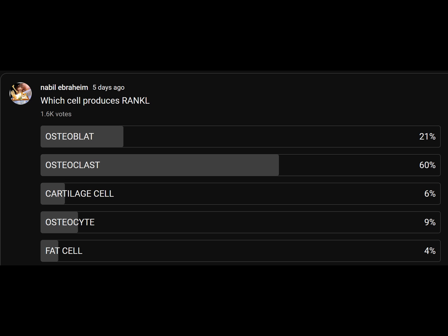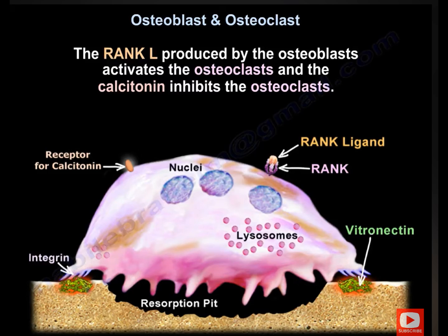Another question: which cell produces RANK-L? Many thought it was the osteoclast. RANK-L works on the osteoclast, but osteoclasts do not produce RANK-L. Osteoclasts produce enzymes that digest the bone. RANK-L is produced by the osteoblast — it activates the osteoclast. Calcitonin inhibits the osteoclast.